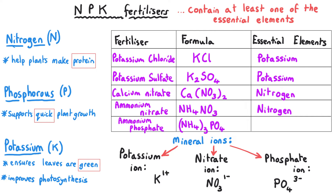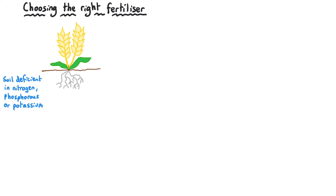Ammonium phosphate has got the elements nitrogen and phosphorus in its formula. The first thing someone needs to do when choosing the right fertiliser is to analyse their soil and find out which minerals are deficient, then pick the fertiliser that provides the minerals they need.